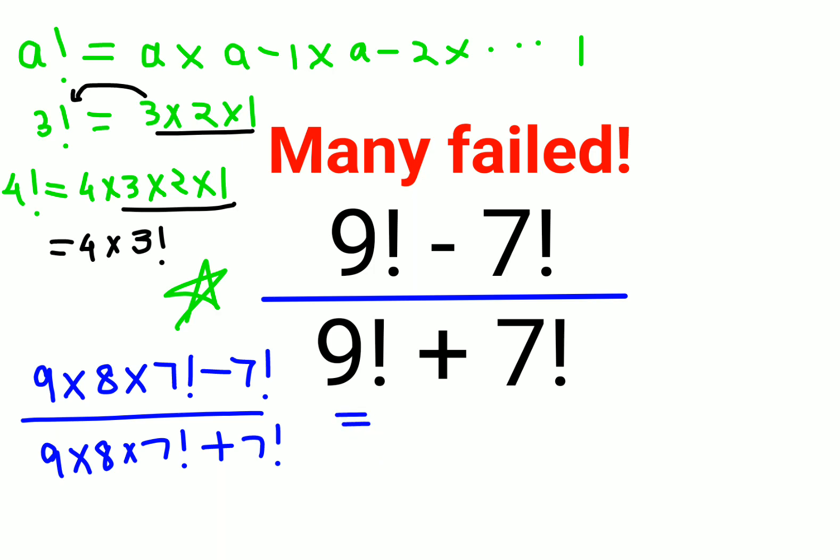So now what happens is you take out what's common, which is 7 factorial, and then you are left with 9 into 8 minus 1. Here also what we can take out is 7 factorial, and I am left with 9 into 8 plus 1.